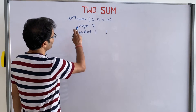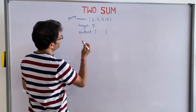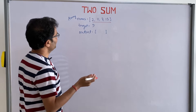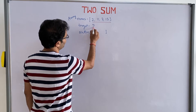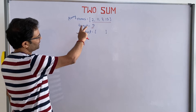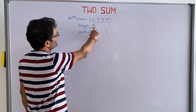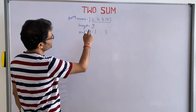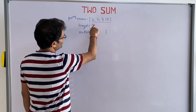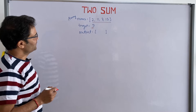The problem is that you are given one array with four elements — it could have any number of elements — and you are also given one target. You have to find which two numbers, when added, give you the target. In this case it is very easy: if you add 2 and 7, you get 9.